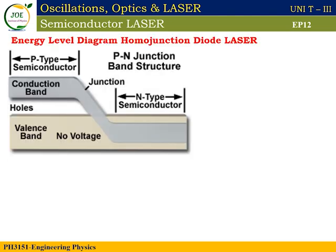Next is the energy level diagram of the PN junction diode laser. The valence electron energy is in the valence band, and the conduction electron energy is in the conduction band. The gap between the valence band and the conduction band is called the band gap. This region is the P-type semiconductor region, and the adjacent region is the N-type semiconductor. The junction is shown at the merge portion.